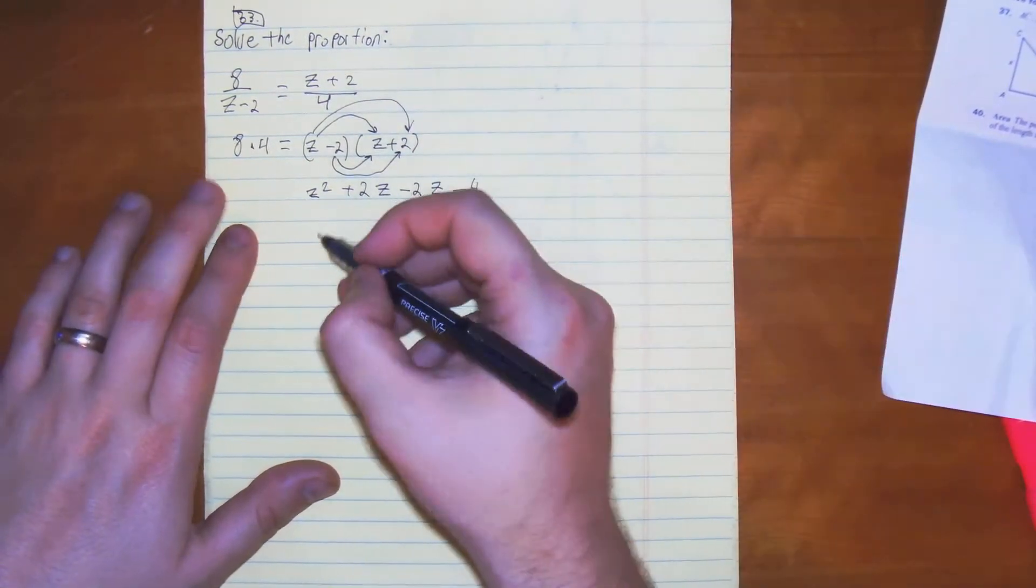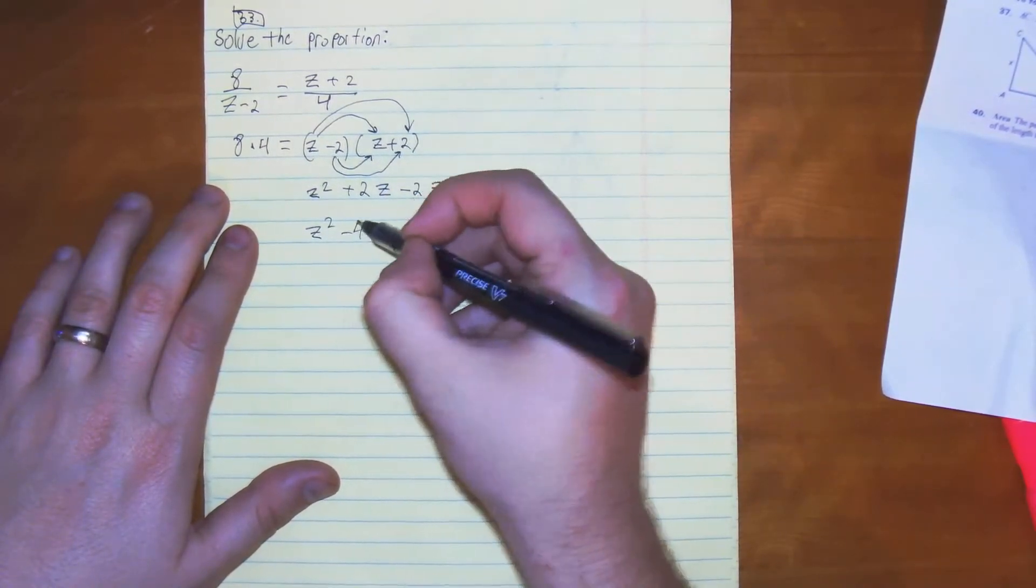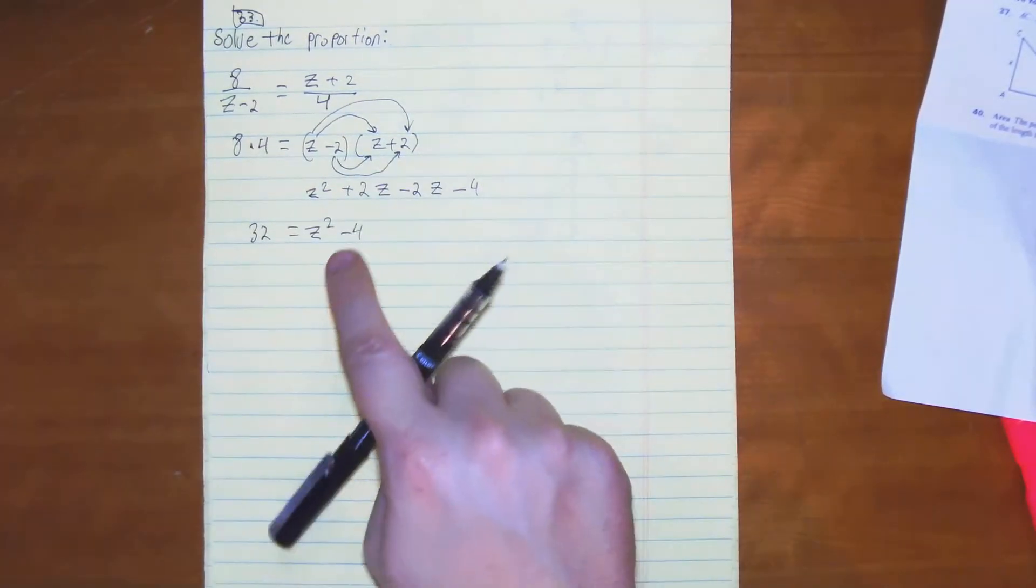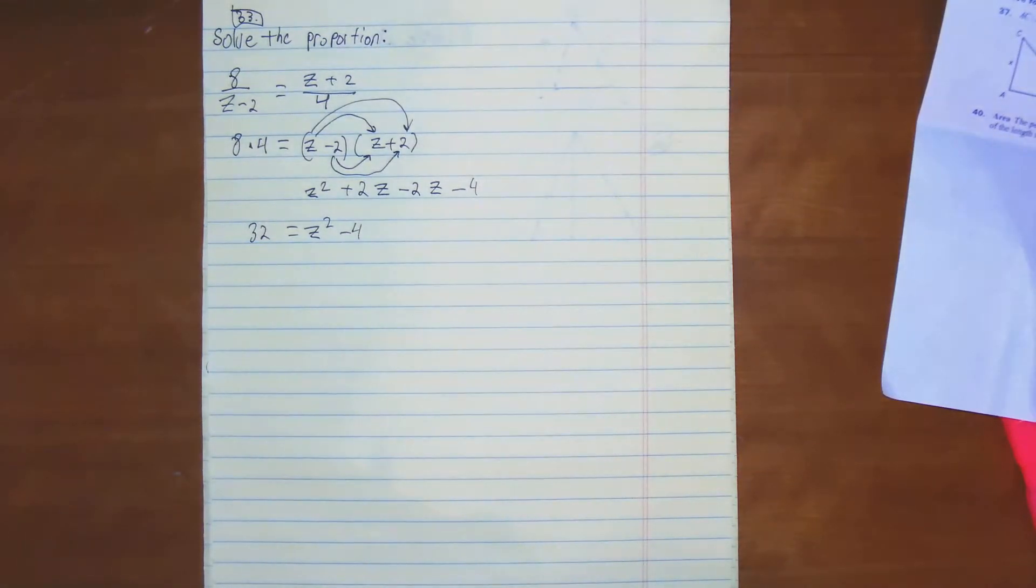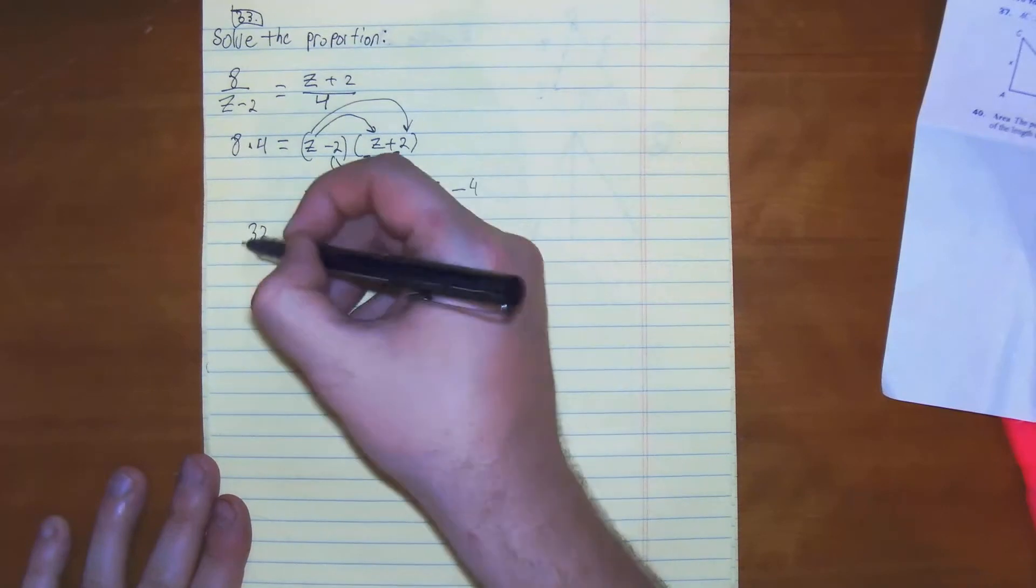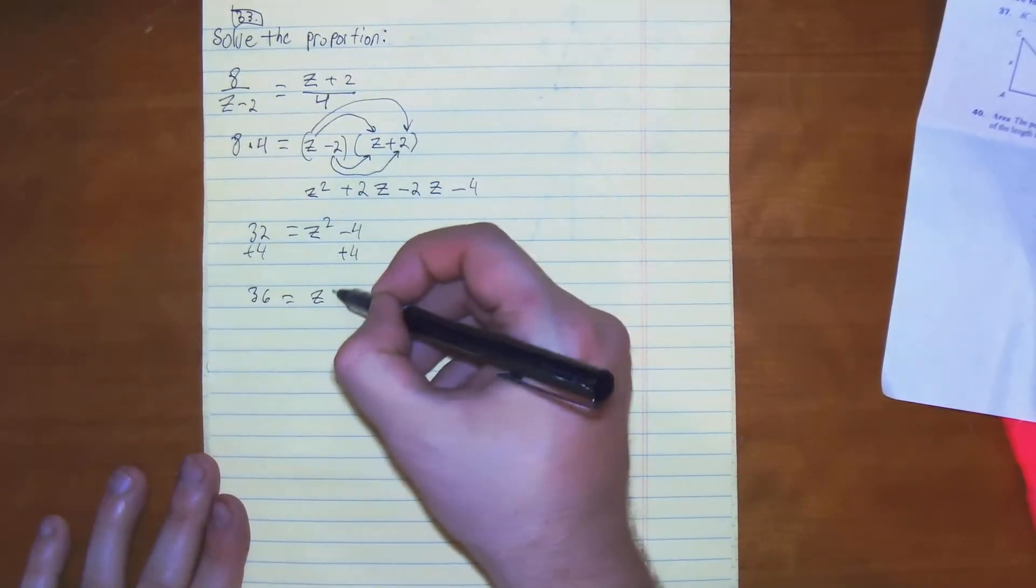So we end up with z squared minus 4 equals 8, 16, 24, 32. From here, we are at 32 equals z squared minus 4. Inverse of minus 4 would be plus 4, plus 4. So we have 36 equals z squared.